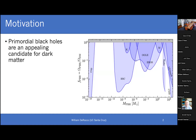Before I dive into the meat of the talk, I'm going to provide a little bit of motivation for why this is something we might want to start thinking about. I'll start by talking about primordial black holes — black holes formed early in the universe from some new physics process — which are an appealing candidate for dark matter. They're fairly generic depending on what models you believe for the early universe.